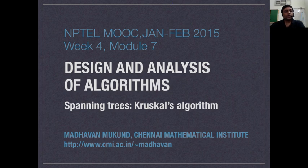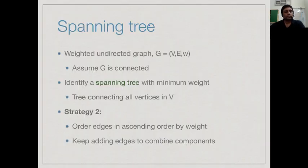We have seen one algorithm for the minimum cost spanning tree, namely Prim's algorithm. Now let us look at the other strategy: Kruskal's algorithm. We are looking for a minimum cost spanning tree in a weighted undirected graph. Prim's algorithm starts with some edge and gradually expands it into a tree, whereas Kruskal's algorithm follows the other strategy, which is to order all the edges in ascending order of weight.